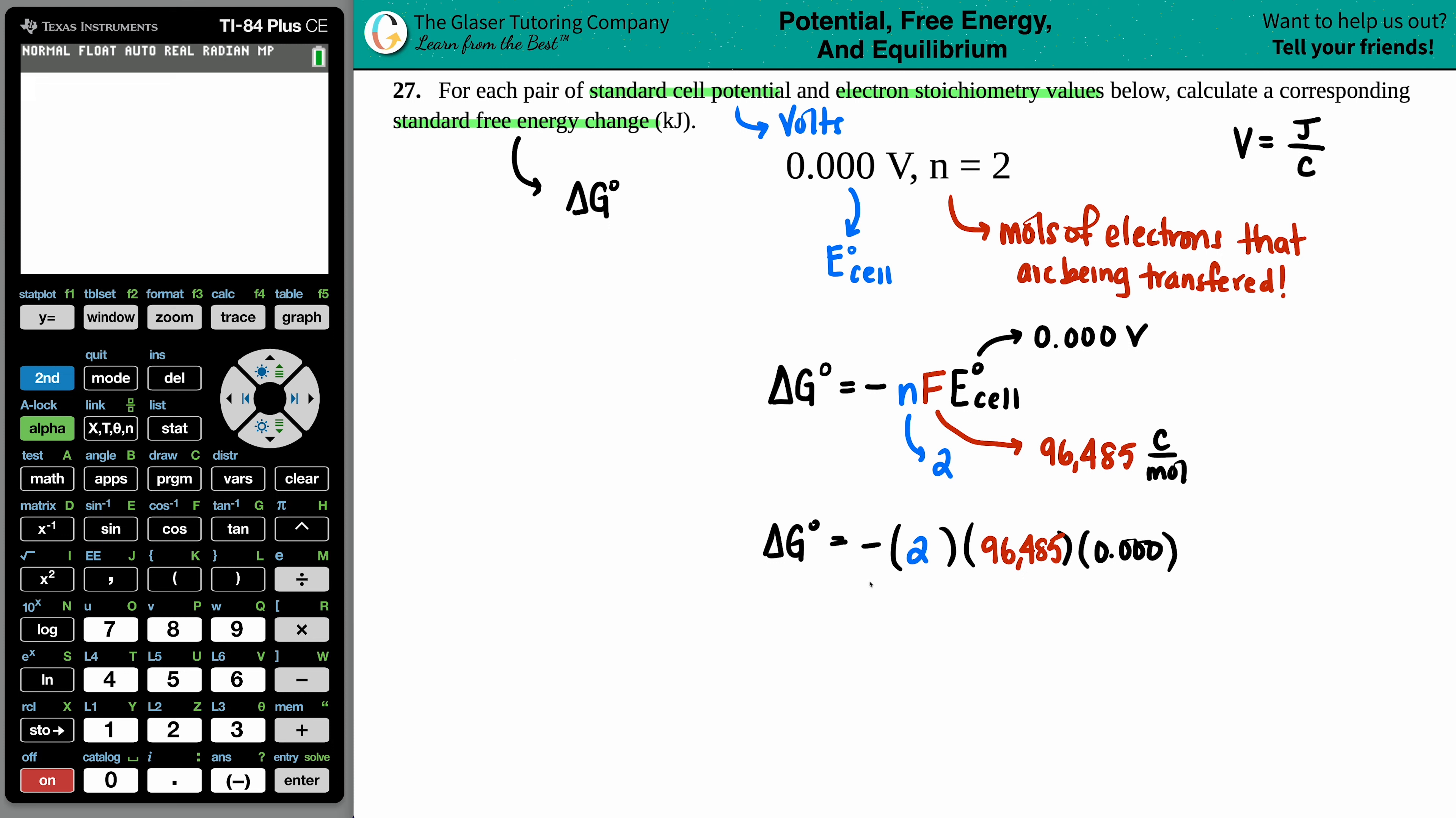Plug it in. I already know that this is going to be zero because anything times zero is zero, but you could always just double check. Negative two times 96,485 times 0.000. And there you go. Zero.